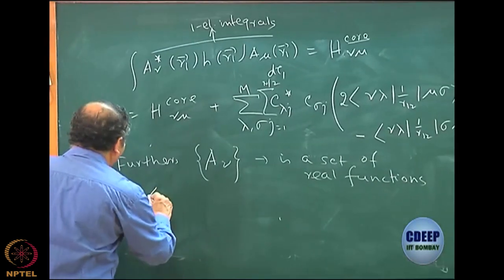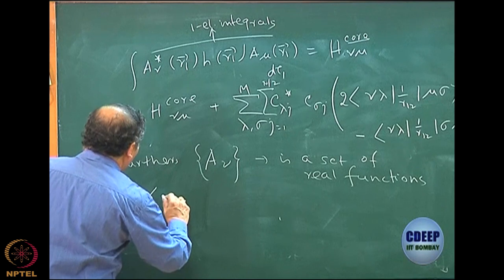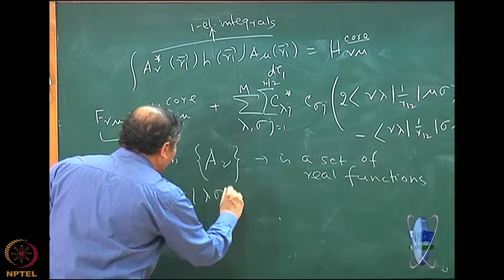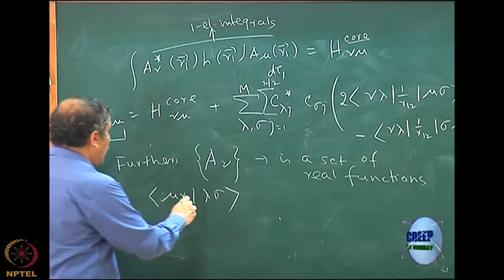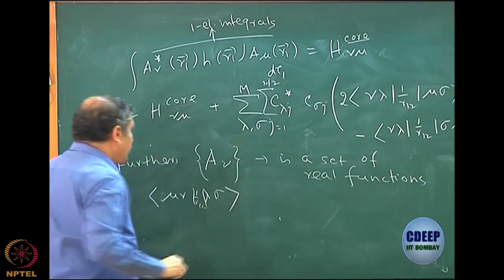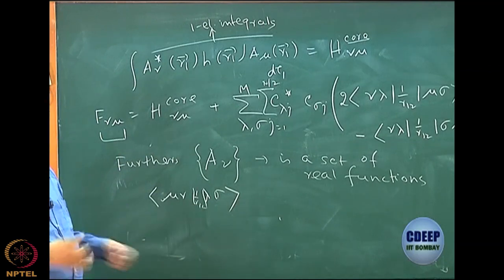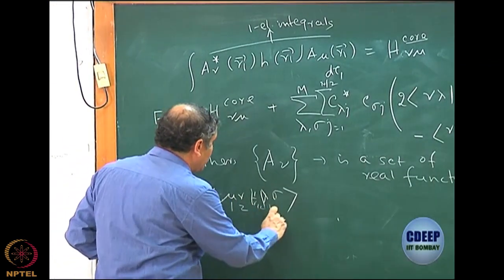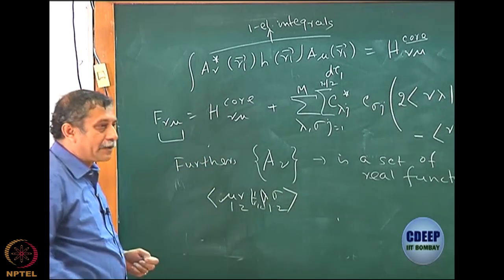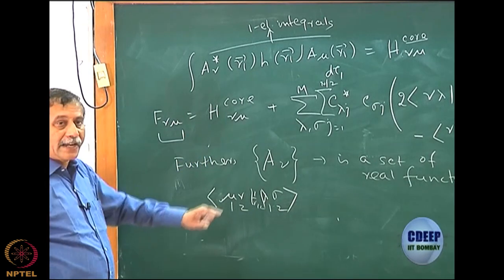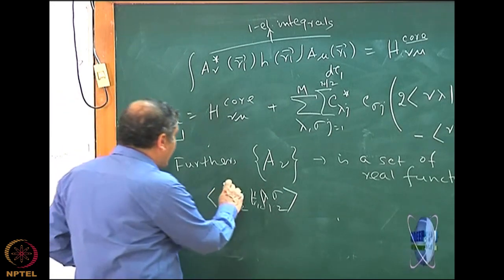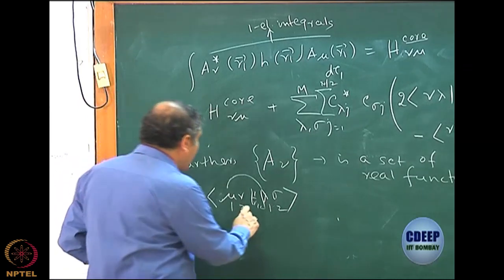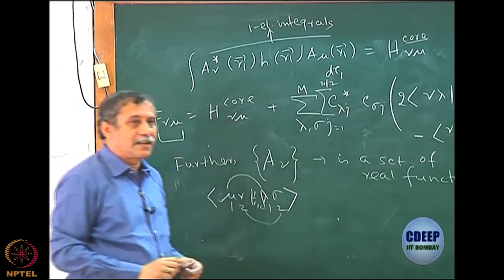One of them is the following. Let me take one type of function — let's say mu, nu, lambda, sigma; it does not matter what the index is. I am not writing 1/r12, but 1/r12 is there. Let's say all are real — this is electron 1, this is electron 2 in terms of dummy variables. Since all are real, I can do lots of interesting things. I can interchange mu and lambda, I can interchange nu and sigma, and the result will be equal.